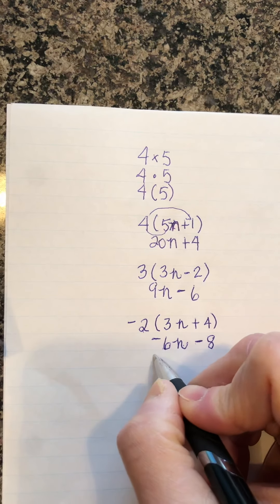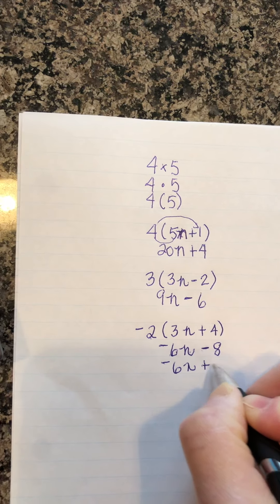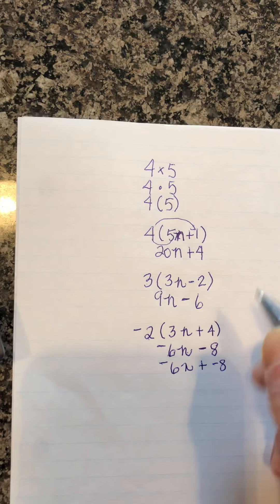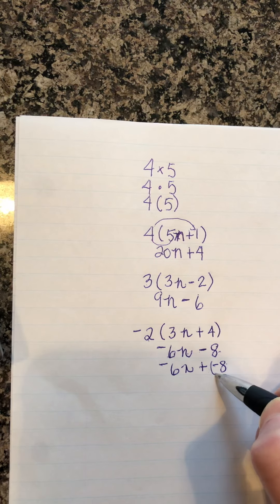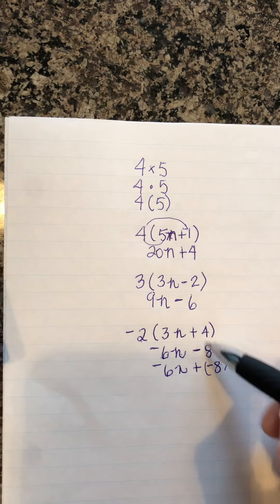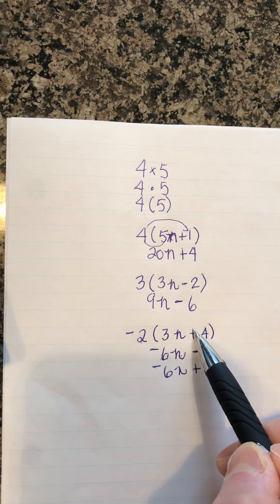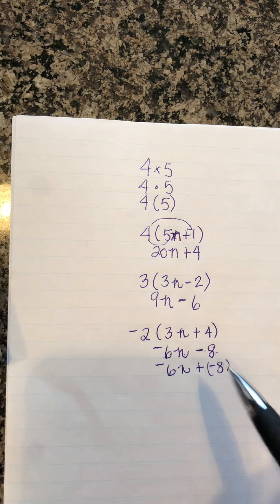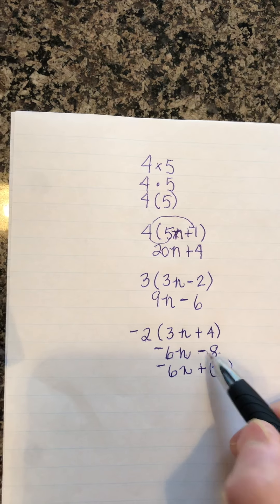Which would be the same thing as if I had negative 6n plus negative 8. It's just that this is clean; this sort of gets messy because then we've got brackets here and everything. So we always sort of pretend that we're multiplying a negative times that addition, making it a negative times a positive, so it becomes negative 8.